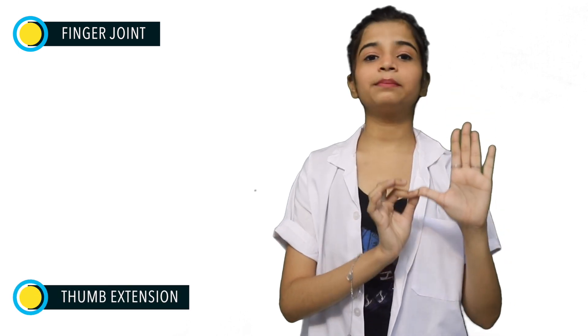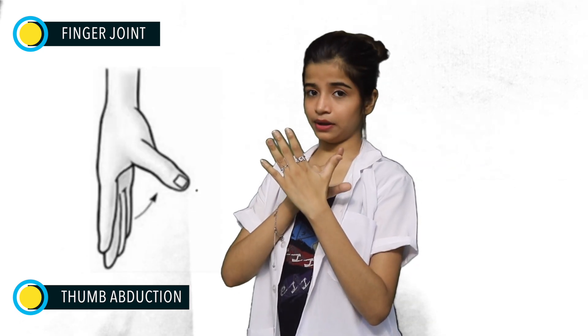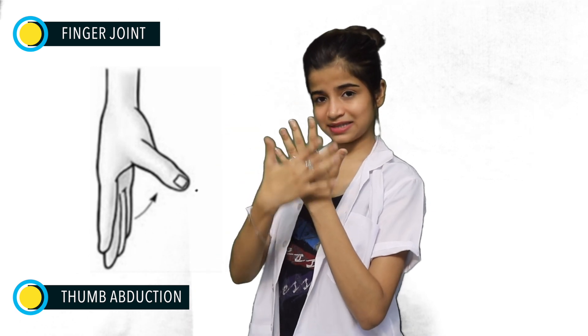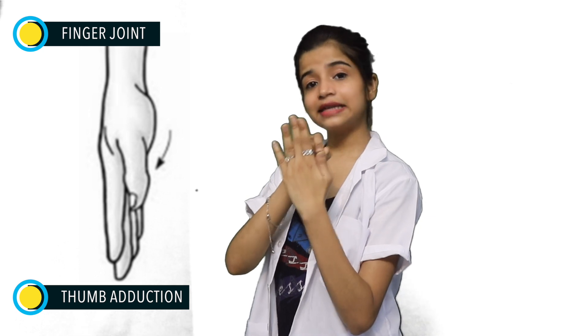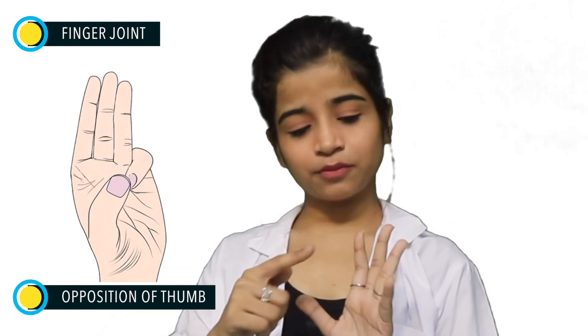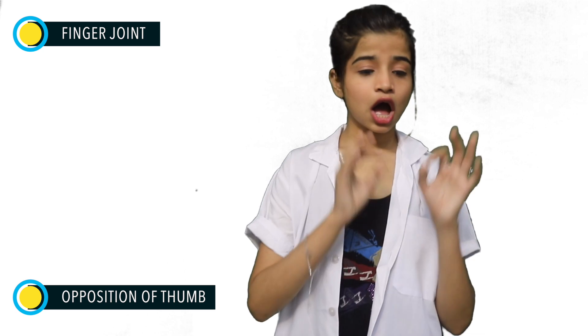The thumb is capable of doing flexion — moving it towards the palm — and extension, moving it away from the palm back to its normal position. The thumb is also capable of abduction — moving the first metacarpal away from the second metacarpal. Bringing the thumb back to the second metacarpal is called adduction. The last movement is opposition of the thumb — the tip of the thumb touching the tip of the little finger or the tips of all other fingers.